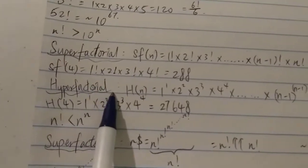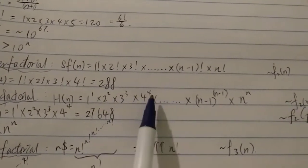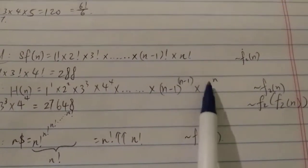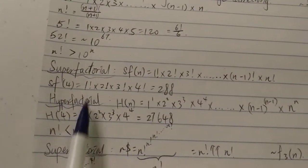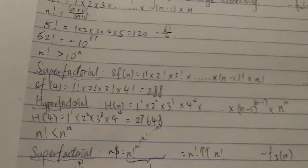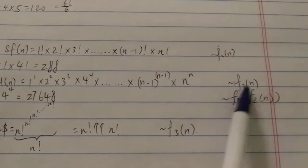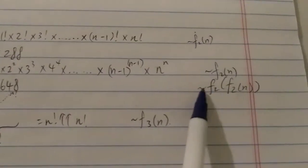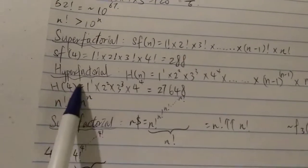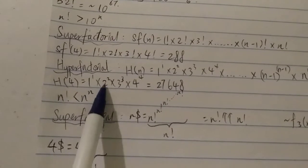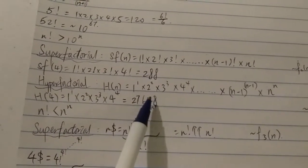The next one is the hyperfactorial, H(n), which equals 1¹ × 2² × 3³ × 4⁴ × ... × nⁿ. Since n^n grows faster than n factorial, the hyperfactorial grows faster than the super factorial — slightly faster. Its fast-growing hierarchy is still around f₂(n), slightly faster than the super factorial but not yet f₃(n), and actually close to f₂(f₂(n)). For example, H(4) = 1¹ × 2² × 3³ × 4⁴ = 27,648.